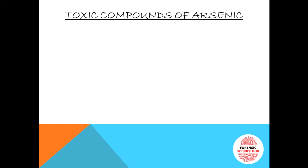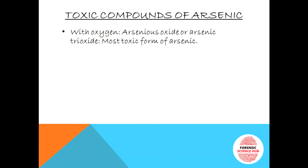Now, the toxic compounds of arsenic. Arsenic can form bonds with oxygen and sulfur, producing different compounds. With oxygen, arsenic oxide — also known as arsenic trioxide — is formed. This is the most toxic form of arsenic. In common language it is also called sankhya or somalkhar. This arsenic is white in color, so it is also known as white arsenic.